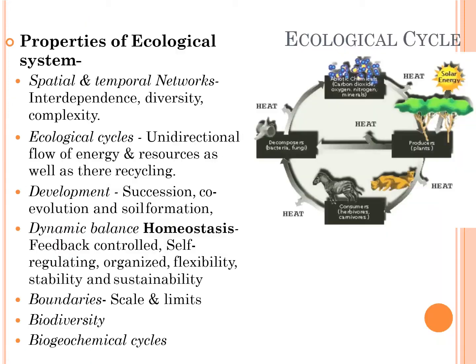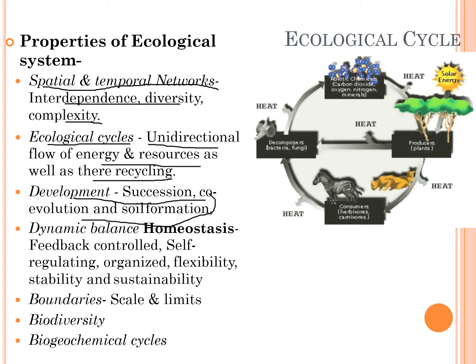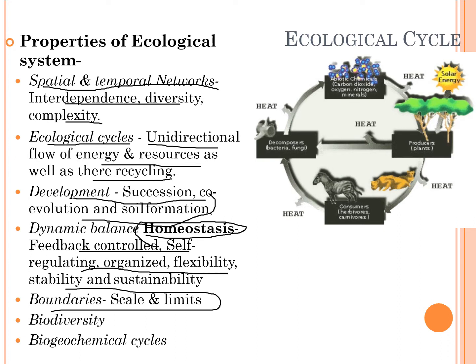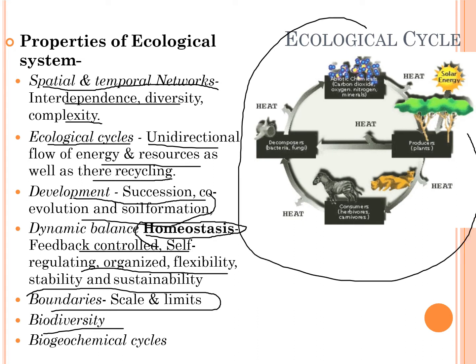Moving on, let's talk about some of the properties of ecosystems. These include spatial and temporal networks, interdependence, diversity, and complexity. We have ecological cycles which involve unidirectional flow of energy and resources, as well as cycling processes. We have development through succession, co-evolution, and soil formation. We also have dynamic balance, maintained through homeostasis, which involves feedback control, self-regulation, organized flexibility, boundaries with scales and limits, biodiversity, and biogeochemical cycles.